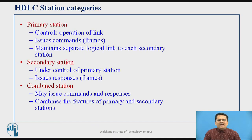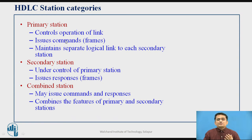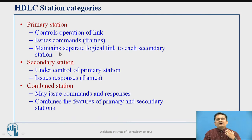When you want to understand HDLC protocol, there is one concept called a station — the data link layer at each node is called a station. There can be three kinds of stations in HDLC. A station can be a primary station, which is the controller of communication. It is responsible for issuing commands, controlling the communication, and maintaining the link to the receiver — which may be a secondary station.